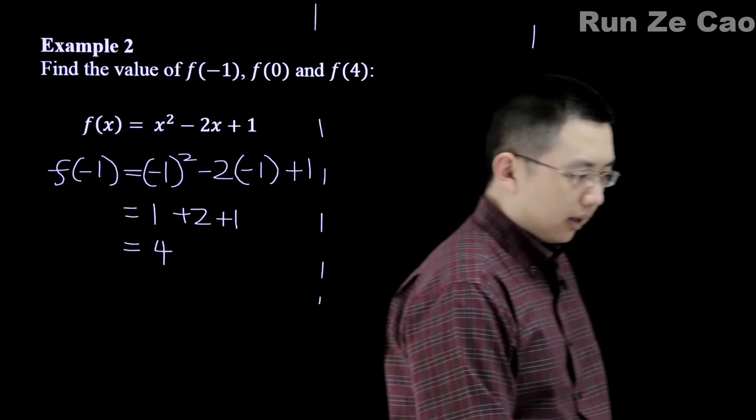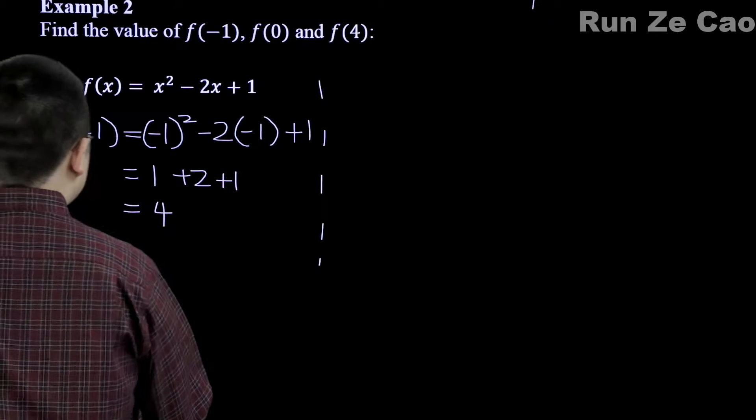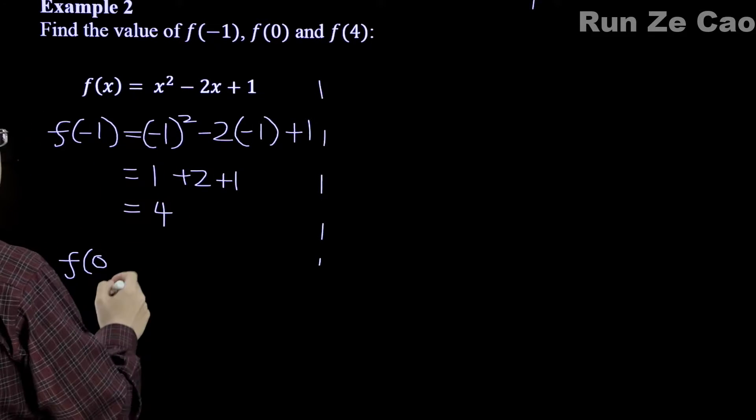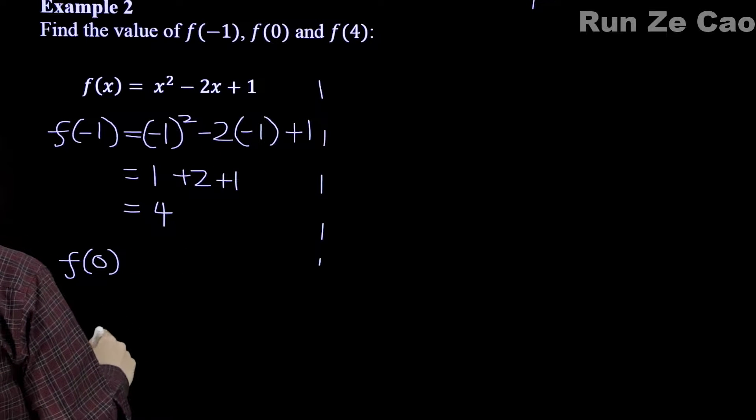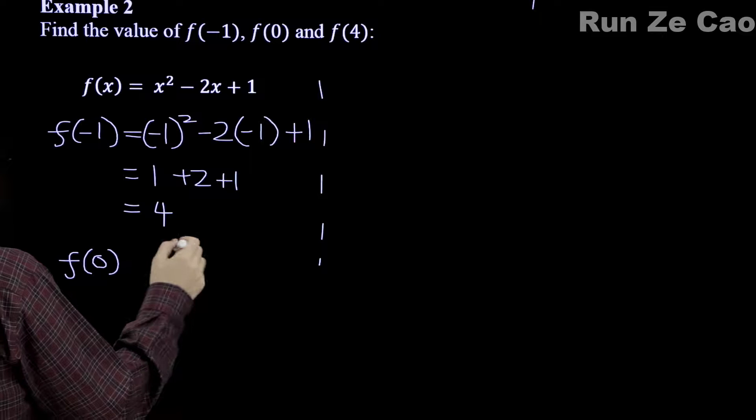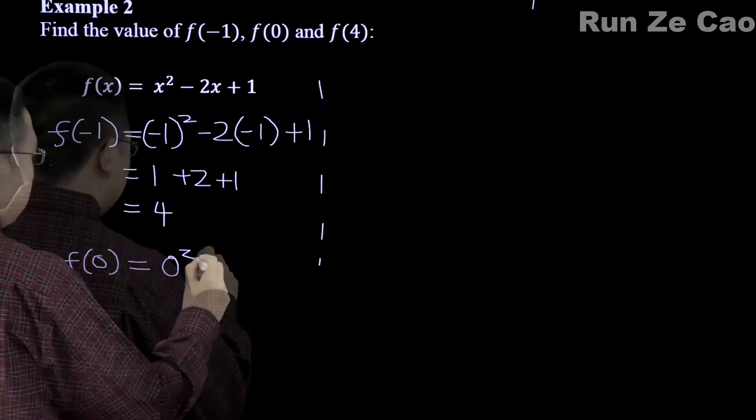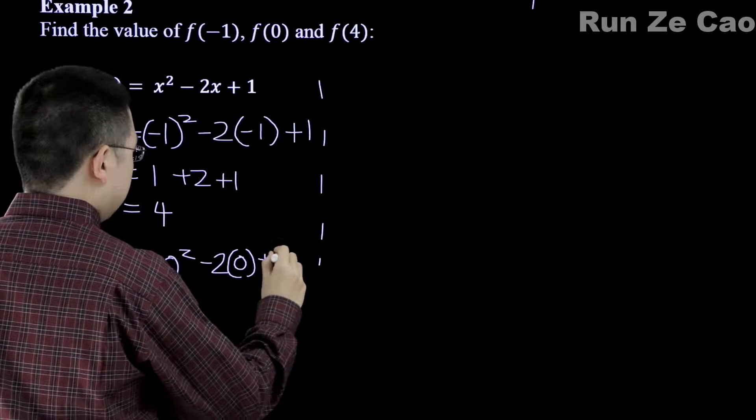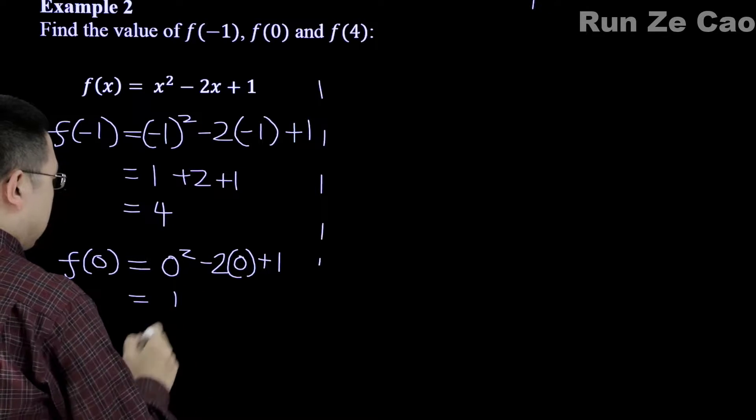Now, what about f(0)? We could write that down here and still be in view of that, but then we're going to start a new column because we only have so much space for this problem.